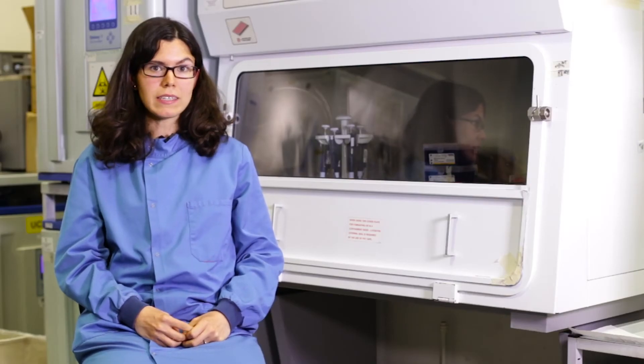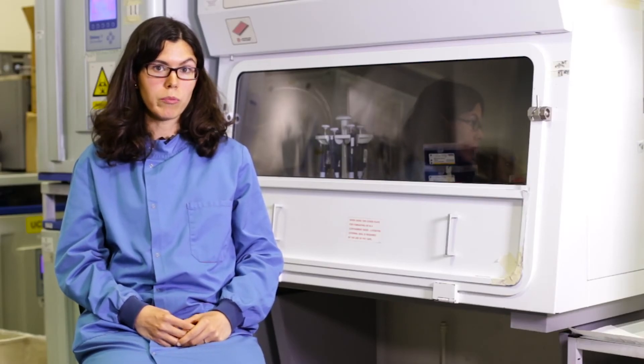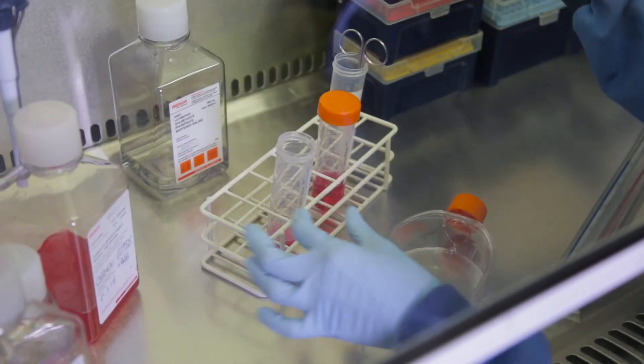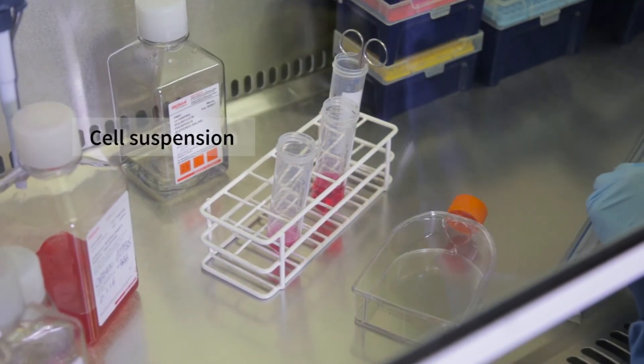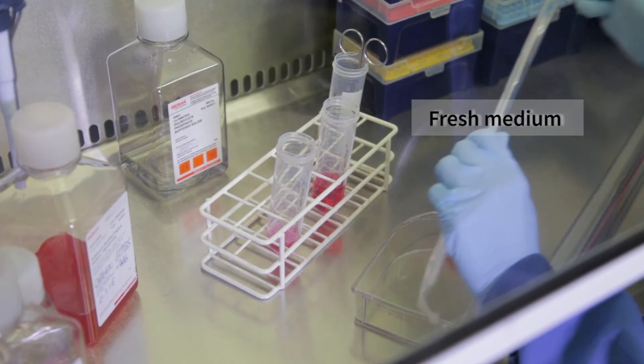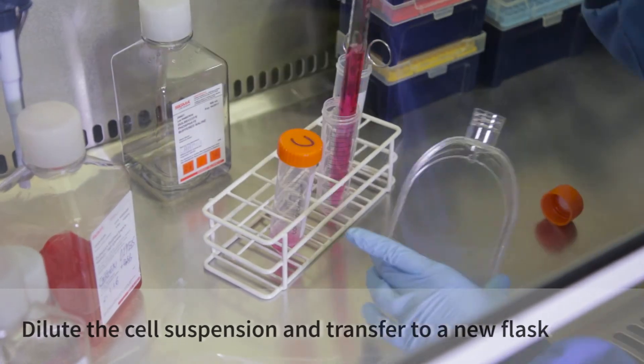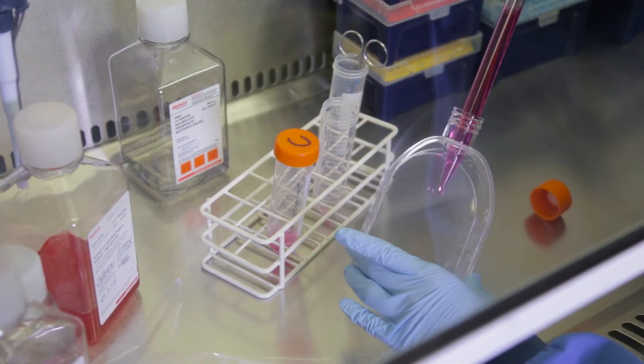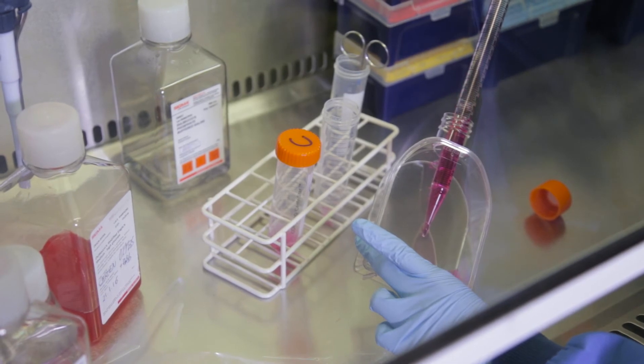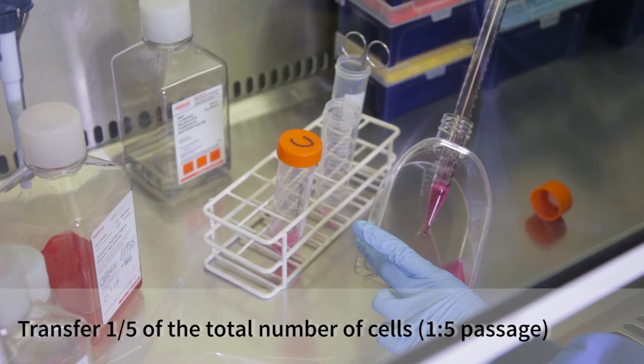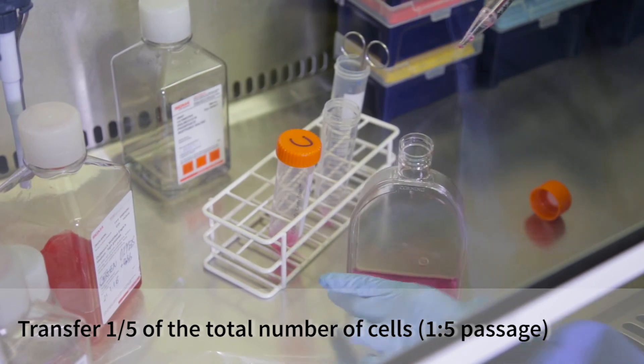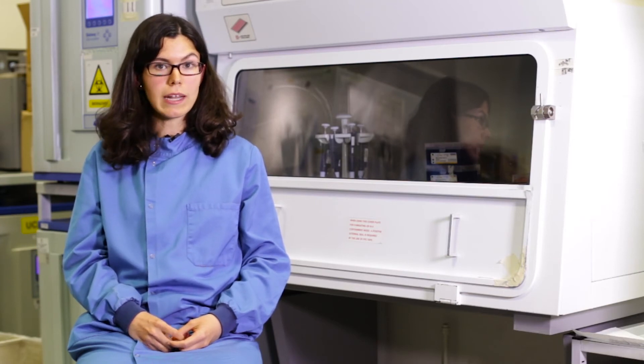I want to keep my cells growing so I can use them again the following week. I will now prepare a dilution of the cell suspension using fresh culture media and put it in a new flask. This is called passaging cells. I will make a 1 into 5 passage. That means I will take one-fifth of the total volume of cells into the flask. I will now put the cells in the incubator at 37 degrees.